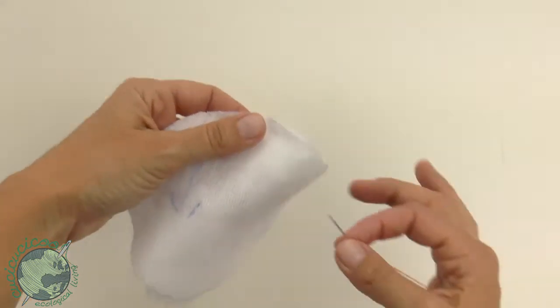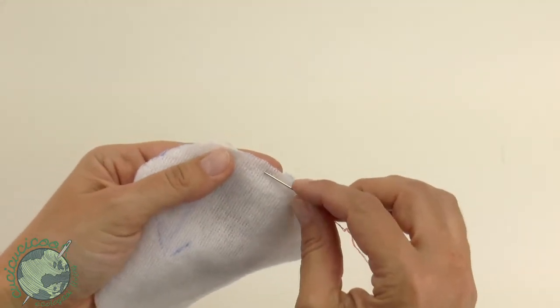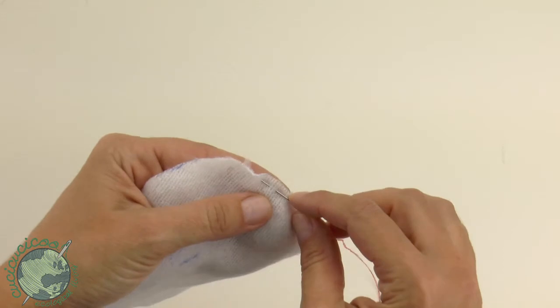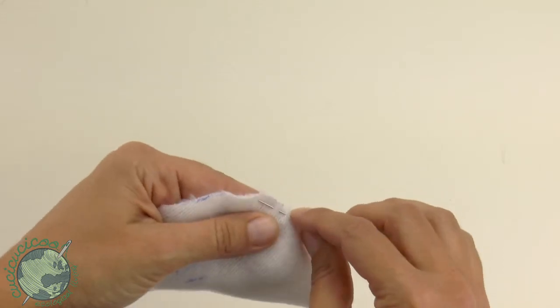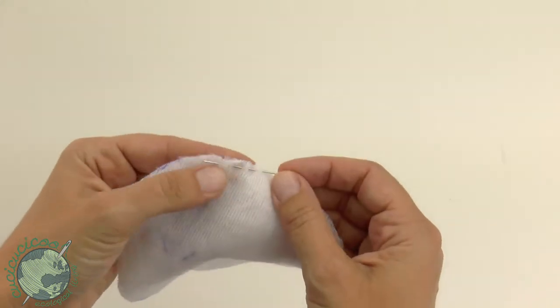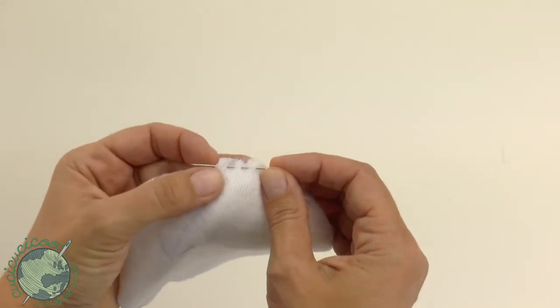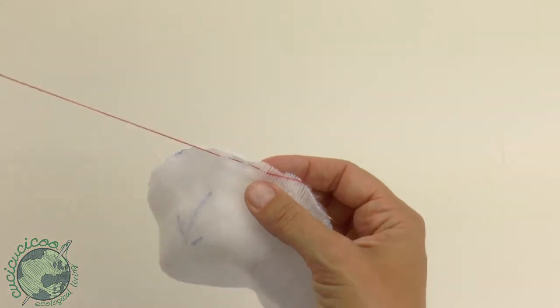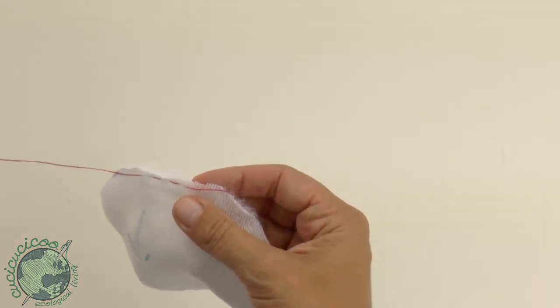So take your circle. We're going to start at one edge. What we're going to do is sew a basting stitch or just a regular running stitch all around the edge of our circle. So start here, just wherever on the edge. Really close to the edge. Pull the thread through.